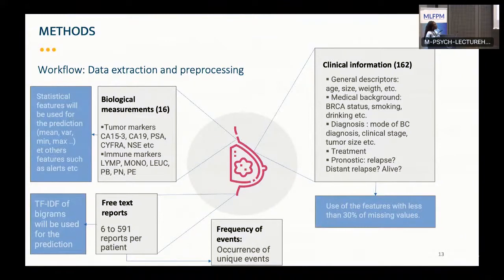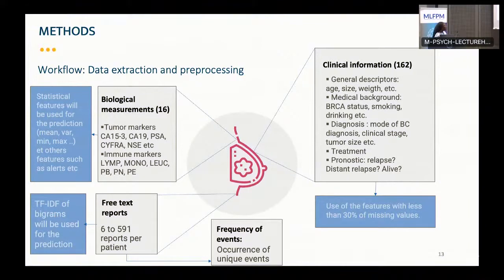For pre-processing the structured data, I use the features with the most values for clinical information. For biological measurements, I extract statistical features such as mean, variance, and max, as well as alert features based on the normal range of biological measurements. For the free-text reports, I use TF-IDF of bigrams for prediction. TF-IDF measures the frequency and importance of a bigram within the corpus. I also extracted a feature called frequency of events, capturing the occurrence of unique events per patient from each report.